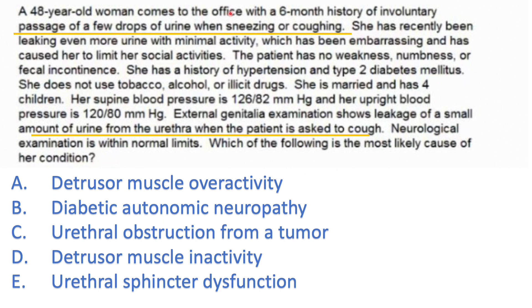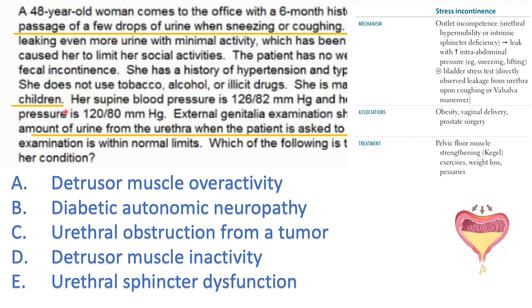The case: a 48-year-old woman presents with a six-month history of involuntary passage of a few drops of urine with sneezing or coughing. She's recently been leaking more urine with minimal activity, which has been embarrassing. She has no weakness, numbness, or fecal incontinence — it's important to exclude spinal cord lesions, but that's not the case here.